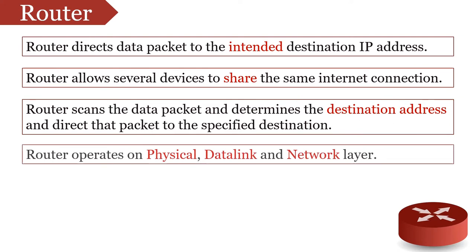Router operates on three layers: physical layer, data link layer, and network layer. At the network layer, the router determines the logical address of sender and receiver. At the data link layer, the router determines the physical address of sender and receiver. At the physical layer, the router regenerates the data signal.